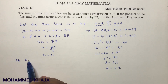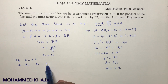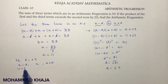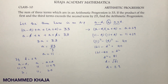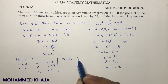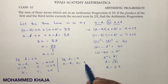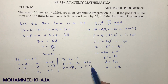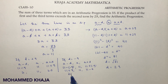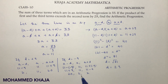Since d squared is 81, d equals plus or minus 9. If d is plus 9, the three terms a minus d, a, a plus d are: 11 minus 9, 11, and 11 plus 9, which gives 2, 11, and 20. If d is minus 9, then a minus d becomes 11 minus (minus 9) equals 20, a is 11, and a plus d is 11 plus (minus 9) equals 2. So the series is 20, 11, 2.